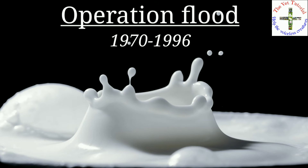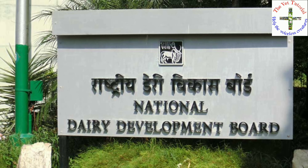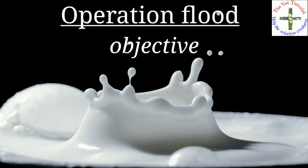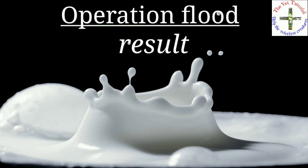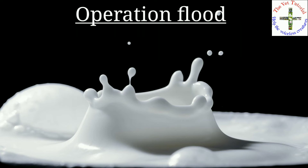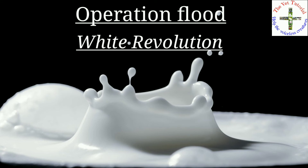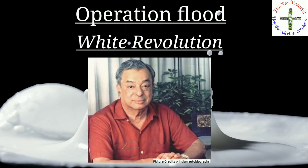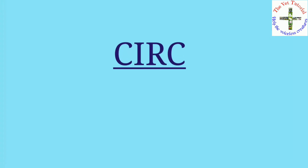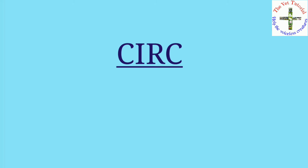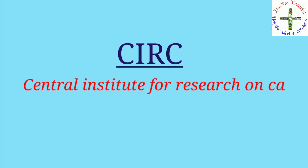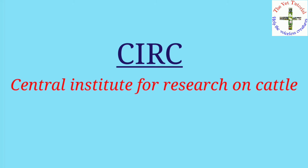Operation Flood ran for 26 years, from 1970 to 1996. It was started by NDDB — National Dairy Development Board. Its objective was to create a nationwide milk grid. As a result, India became the largest producer of milk and milk products. Operation Flood is also known as the White Revolution, and its father is Dr. Verghese Kurien. CIRC — Central Institute for Research on Cattle — is situated in Meerut, Uttar Pradesh.